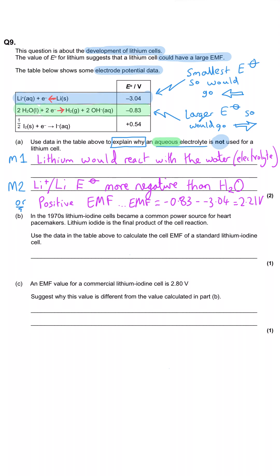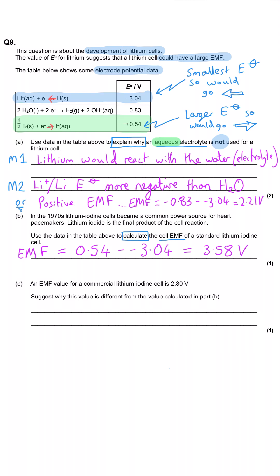Part B notes that in the 1970s lithium-iodine cells became a common power source for heart pacemakers, with lithium iodide as the final product. We're asked to calculate the cell EMF of a standard lithium-iodine cell. We find the difference between the two electrode potential values: iodine's is the larger number, so it's always larger minus smaller: 0.54 − (−3.04) = 3.58 V.